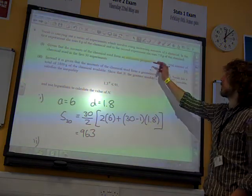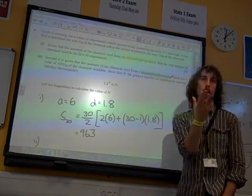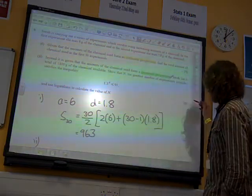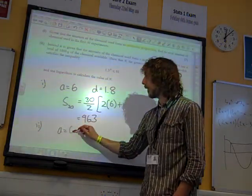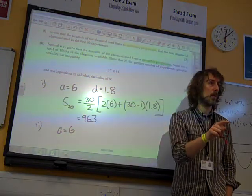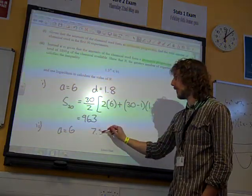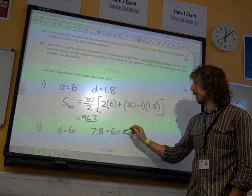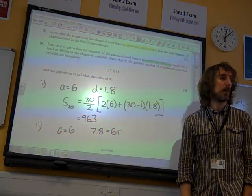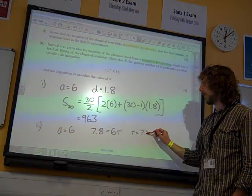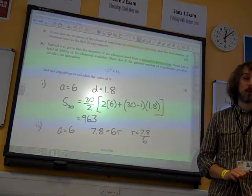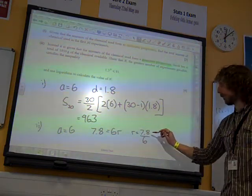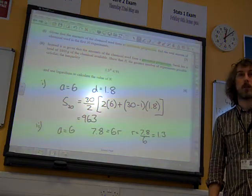So now we're told it's a geometric progression. That's the one where you multiply by something to work out what's happening. So that means that our first term was still 6. But our second term this time is 7.8. Now that second term was the first term times the common ratio. So the common ratio is 7.8 divided by 6 this time. And 7.8 divided by 6 is 1.3.